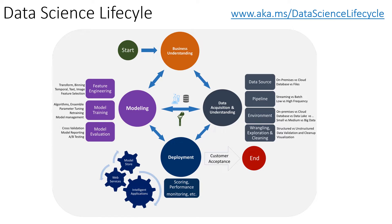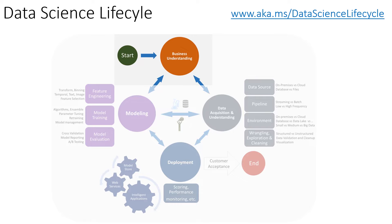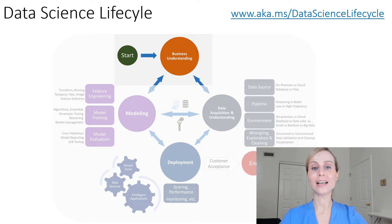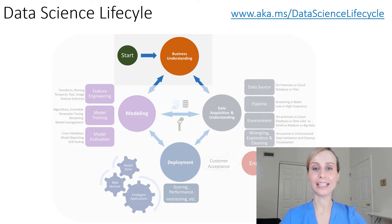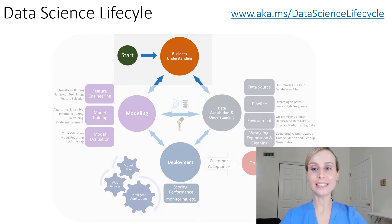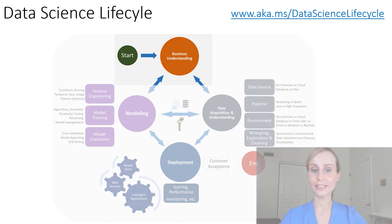Let's start with business understanding. Here, there are two main goals. The first one is about defining objectives — you need to work with your customers and other stakeholders to understand and identify the business problems. The second goal is about identifying data sources: you need to find the relevant data that helps you answer the question that defines the objective of your data science project.